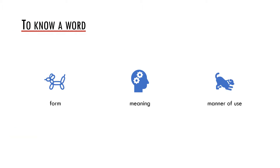We already said that there are various components of the knowledge of a word. To know a word we must know its form, we must know its meaning, and we must also know its manner of use to be able to use the word in an utterance. However, we should ask how such information is stored in the memory. In the real world we may store it in a dictionary, which may be alphabetically listed for example. However, it is for sure that it works differently in the brain.